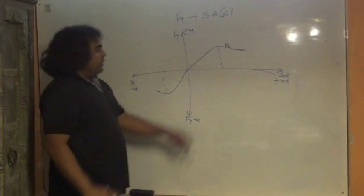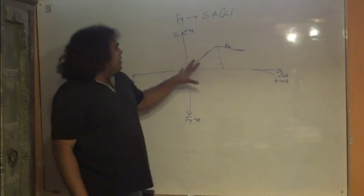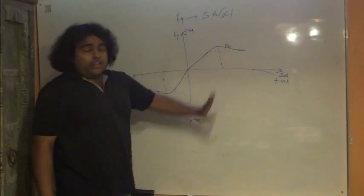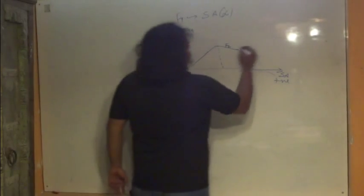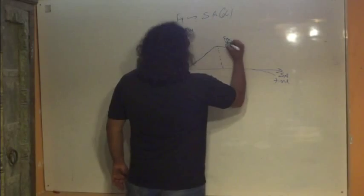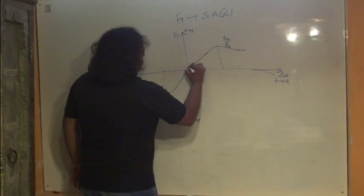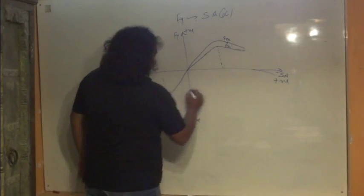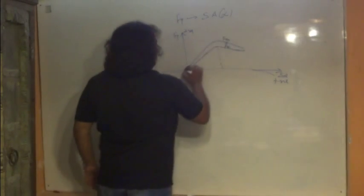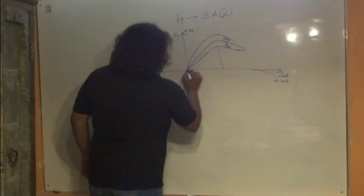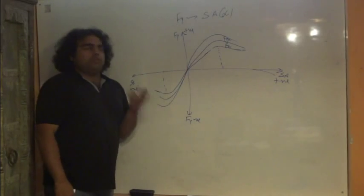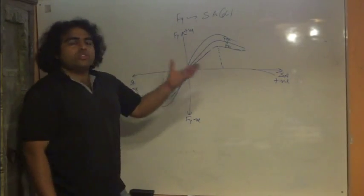This curve is at a particular Fz — that is, a particular vertical load. At one vertical load Fz1, this is the curve. If I go to Fz2 where Fz2 is greater than Fz1, the curve shifts — it shows a higher lateral force. As you go on increasing the vertical load, the peak lateral force increases as well. This is the kind of relationship we see between lateral force and slip angle.